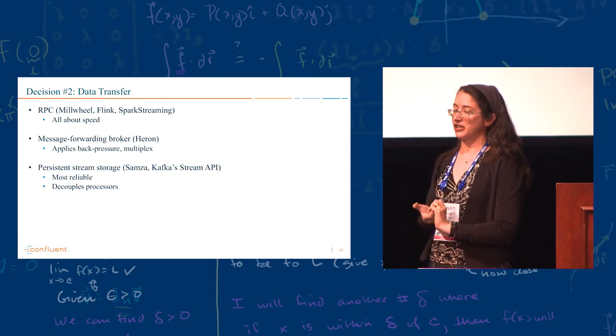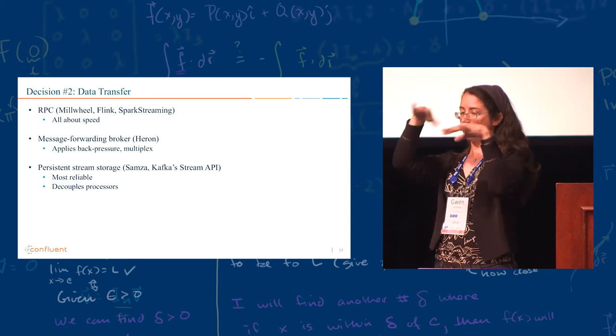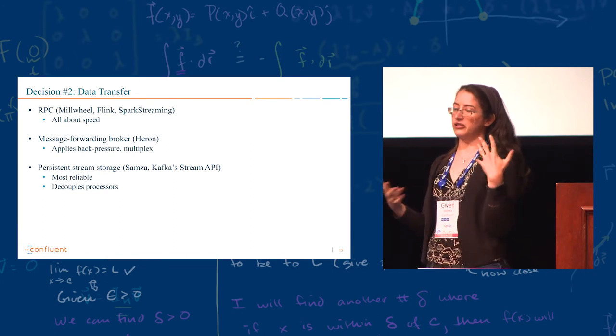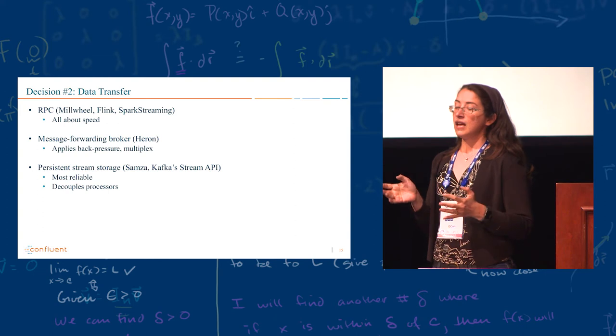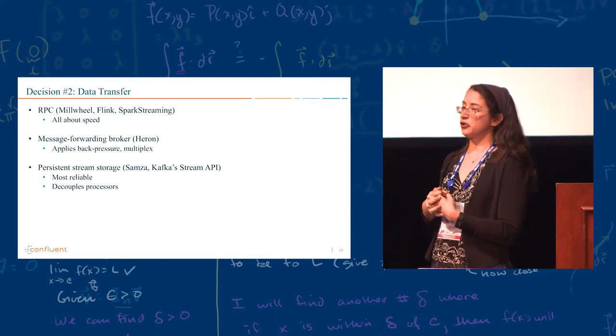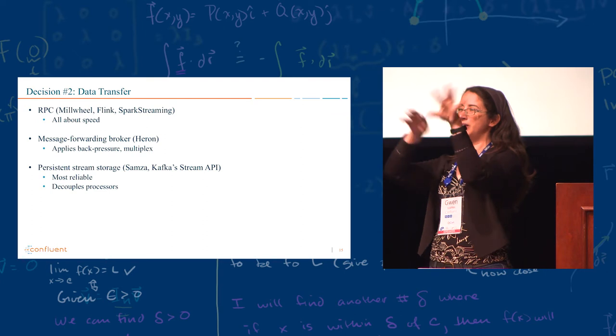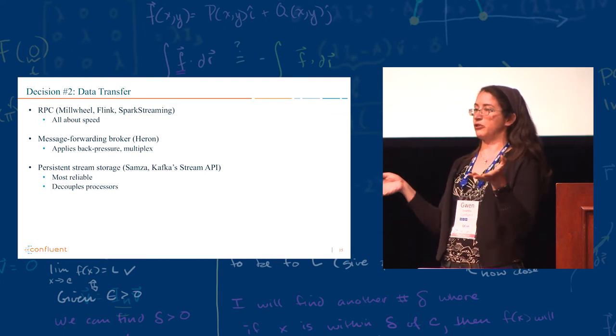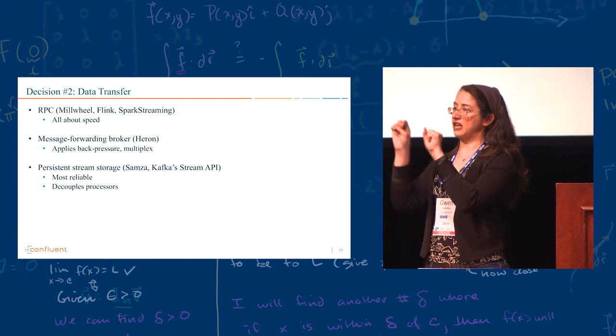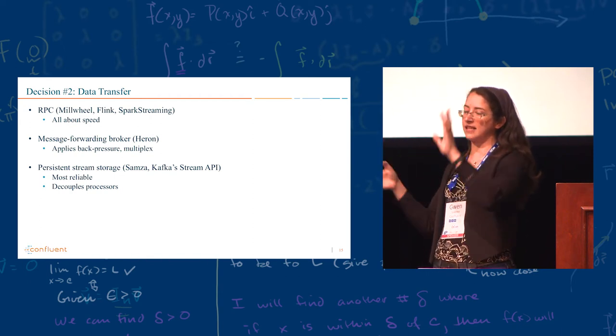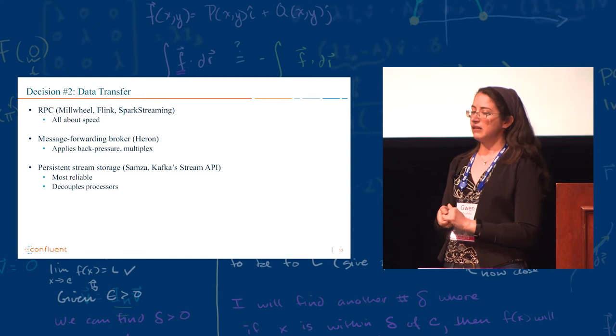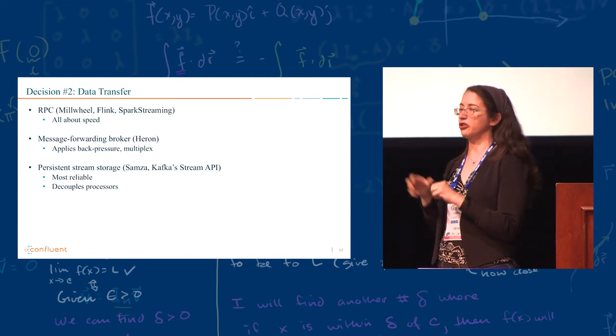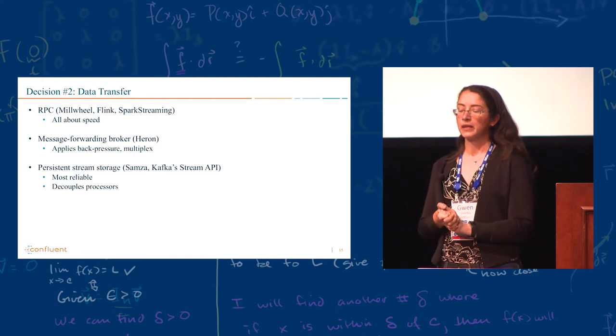And apparently, Millwheel, Flink, and Spark streaming all do that, and it gives you very nice speed, all going in memory. But that kind of means that you have to handle failures and persistency in some other way. Heron has a message-forwarding broker that, basically, you talk to him in order to move messages around. And it allows you to do things like back pressure and to multiplex. But then you have this single point of message-forwarding broker and other things that you have to manage.